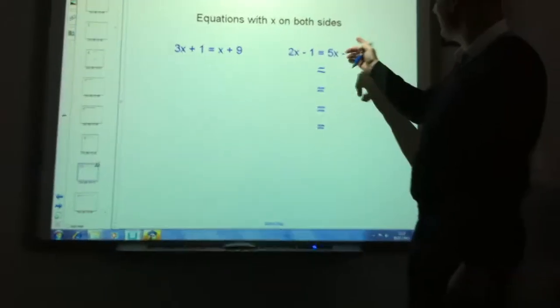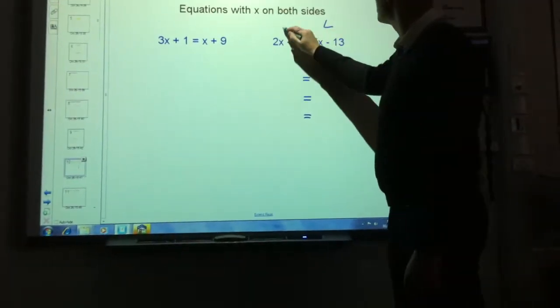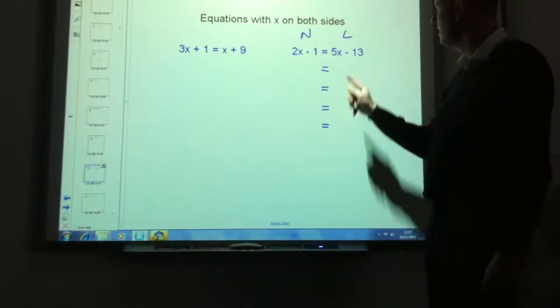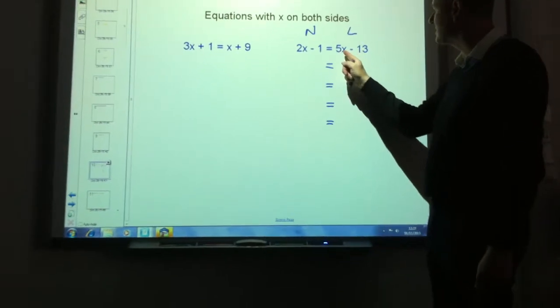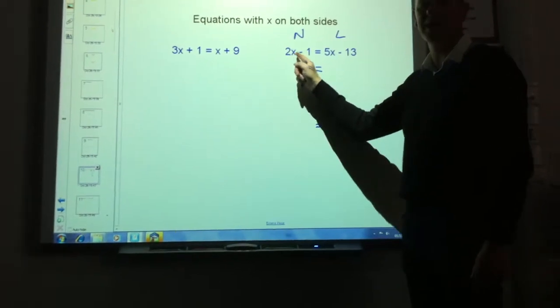Now this time we're going to have letters on this side and numbers on this side, that's because there are five letters here, five x here, and only two letters here, two x here.